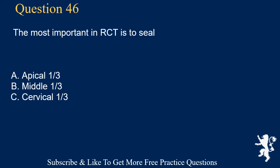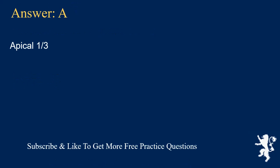Question 46. The most important area to seal in root canal treatment is: A. Apical one-third, B. Middle one-third, C. Cervical one-third. Answer: A. Apical one-third.